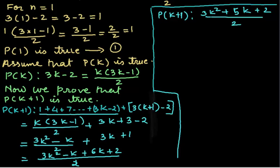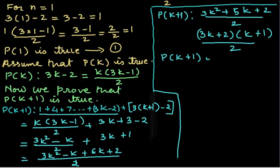We will find the factors on the numerator. The factors will be (3k + 2) and (k + 1) over 2. From this we will observe that P(k + 1) is true.